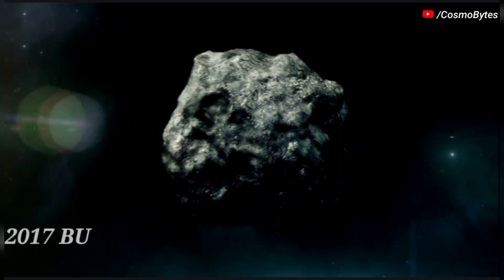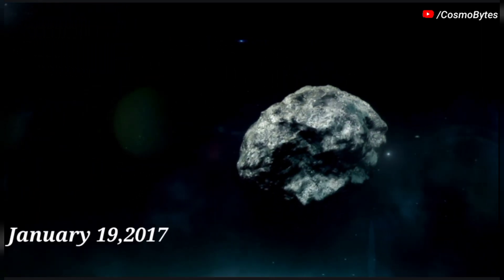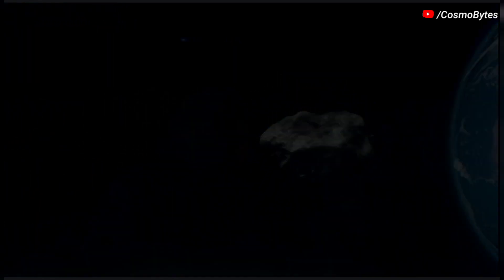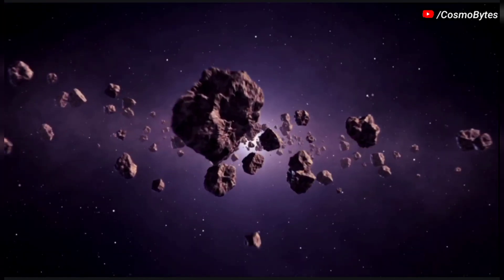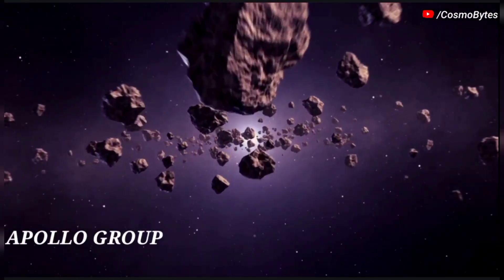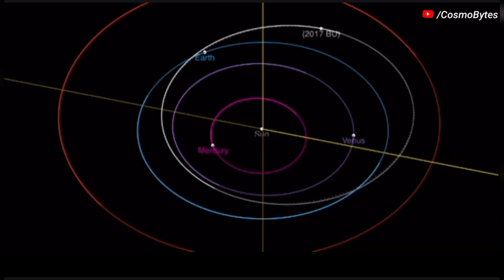The asteroid 2017 BU was detected on January 19, 2017. This near-Earth object belongs to the Apollo group. 2017 BU orbits the Sun every 376 days, 1.03 years.